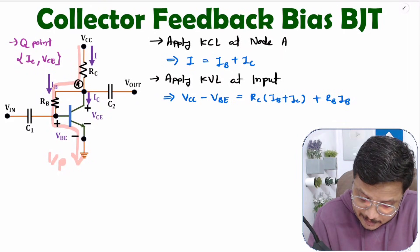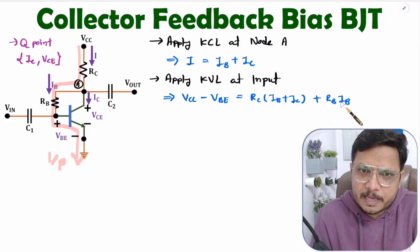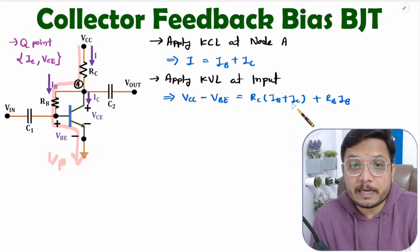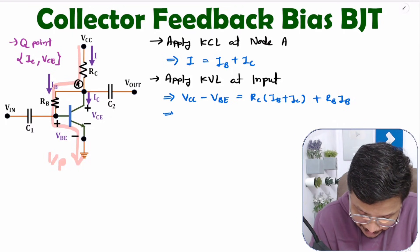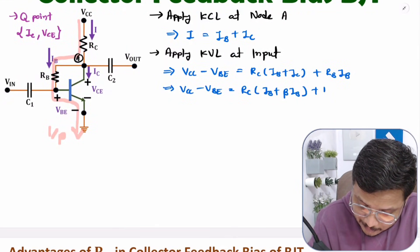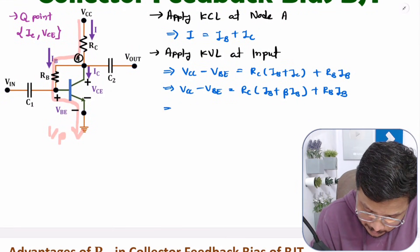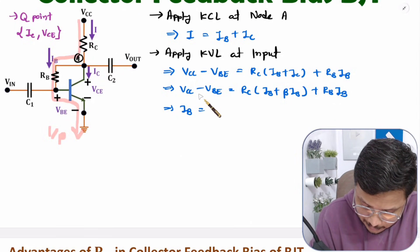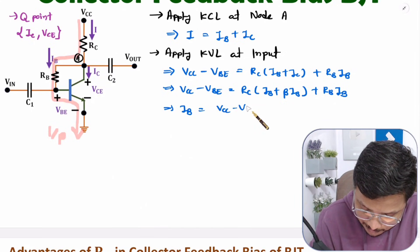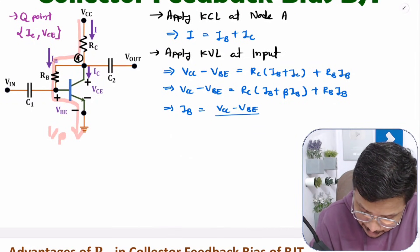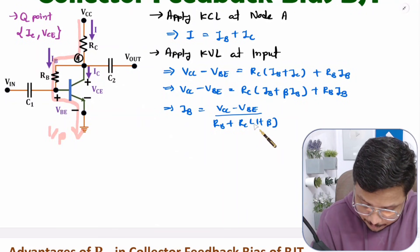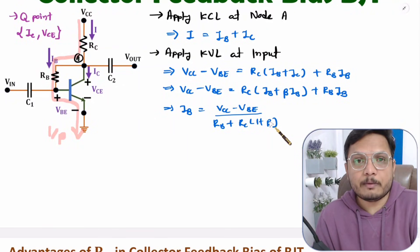We need to convert this equation in terms of base current. Since IC = β·IB, substituting and solving, the base current equation becomes: IB = (VCC − VBE) / (RB + RC(1 + β)). This is a very essential equation.